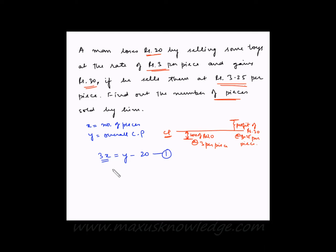And in the second case 3.25 times X is equal to Y plus 30. So in this case he is selling each piece at Rs 3.25. Overall he is selling at 3.25 multiplied by X and this is equal to Y plus 30. Y is the cost price and he is making a profit of 30 rupees overall. This is our second equation.